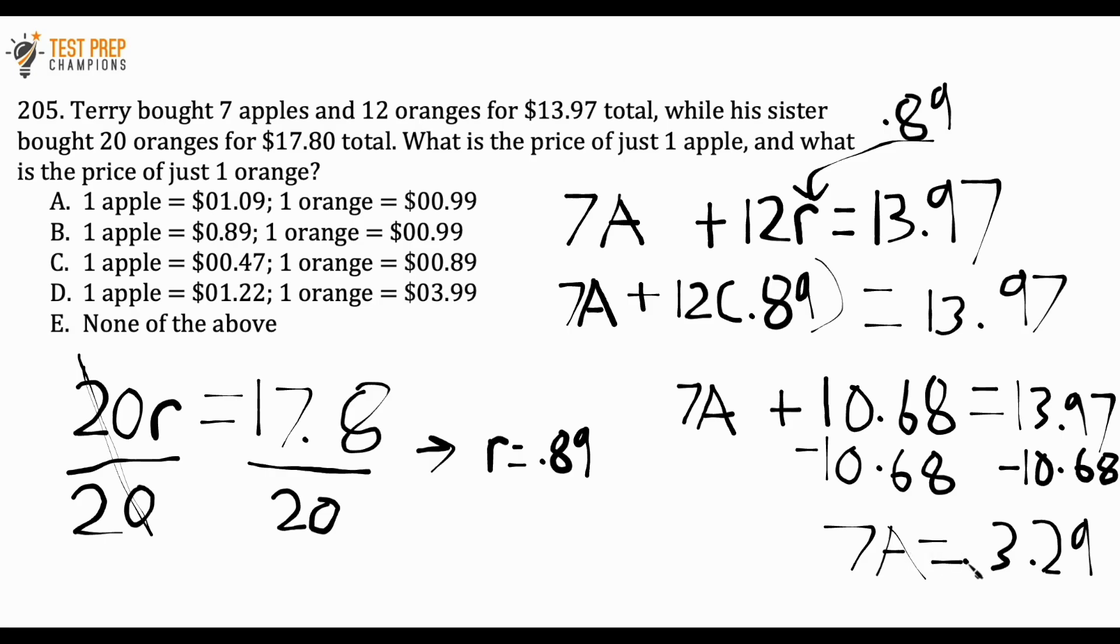Now we want to divide by 7 on both sides. When I divide by 7 on both sides, that's going to tell me what A equals. If I do that, I see that A equals 0.47. After all this, we know that the price of one orange is 0.89, and the price of one apple is 0.47 or 47 cents. So the correct answer here is C.